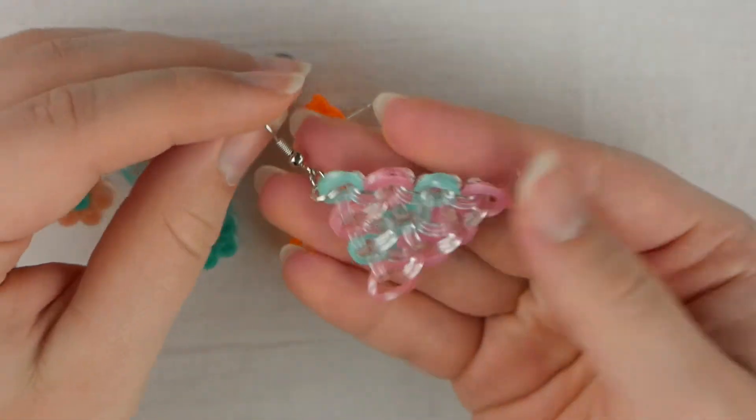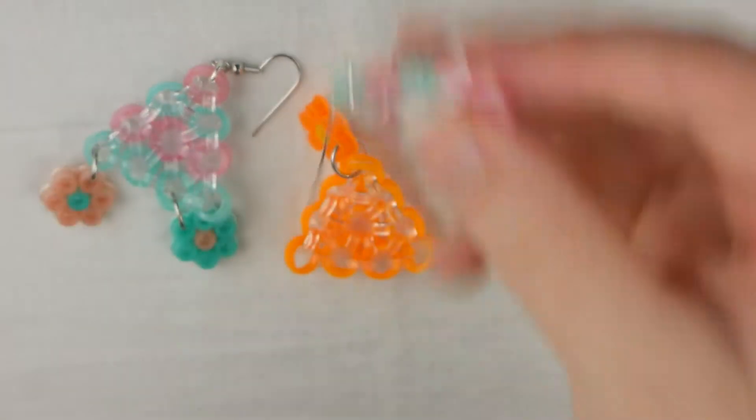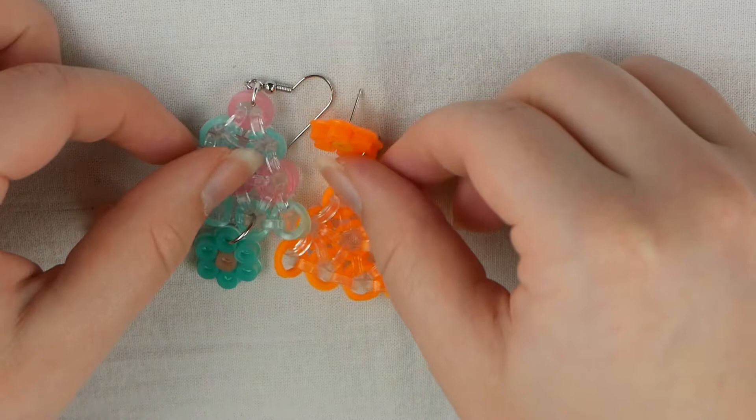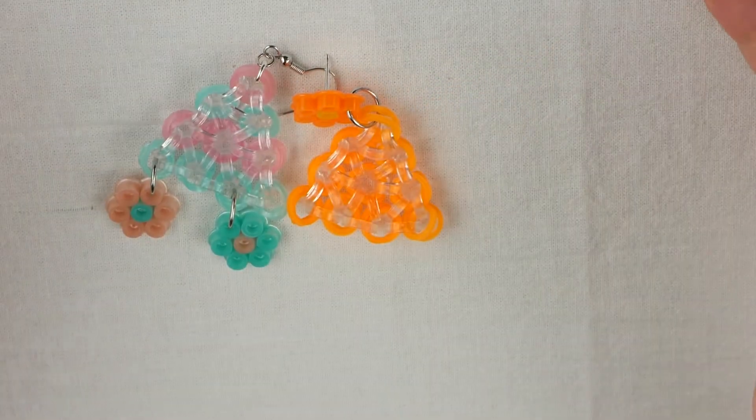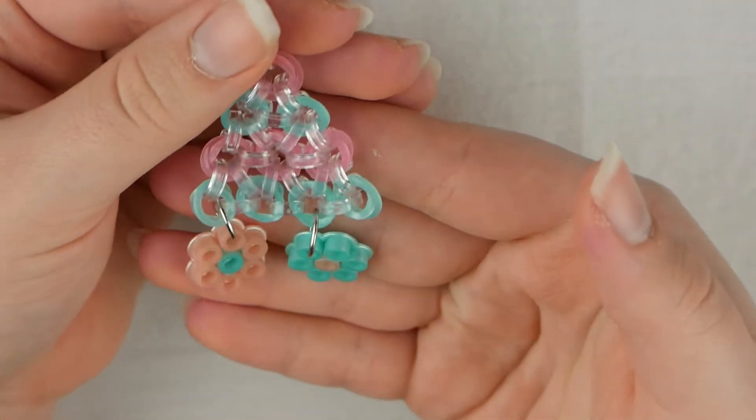I will link that in the i-card so you can watch that video and learn how to make just the rainbow loom triangle and attach the earring hook to it. Then you can come back to this video and my next few videos and learn how to add other decorations to the earrings to make them look cooler.